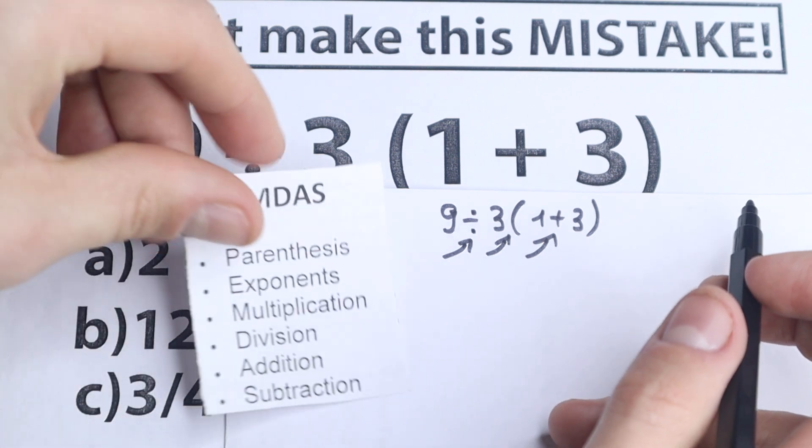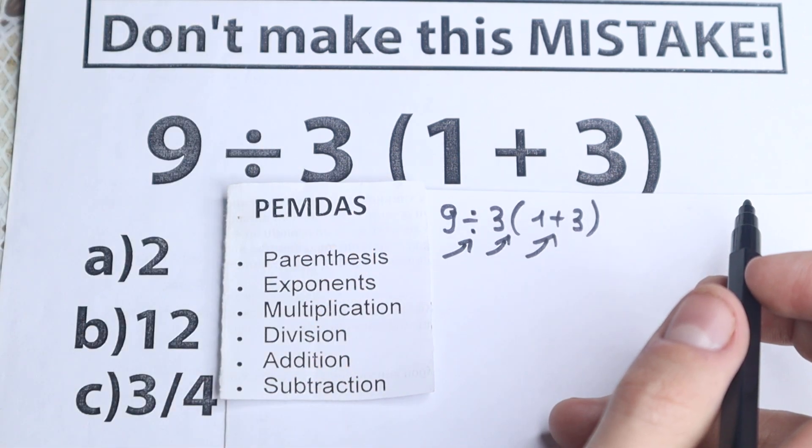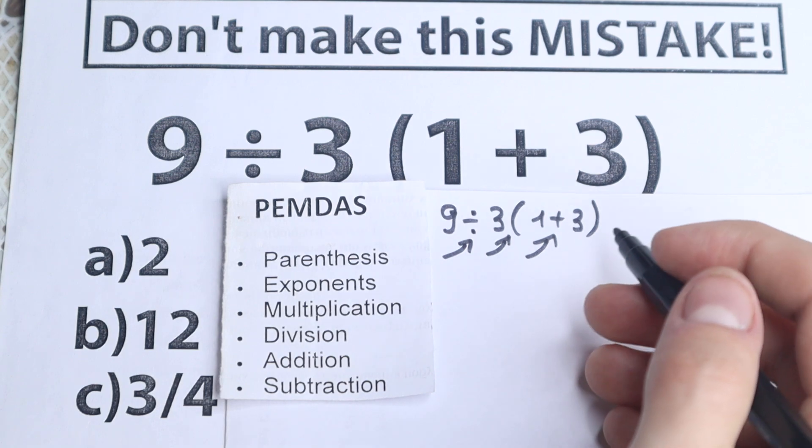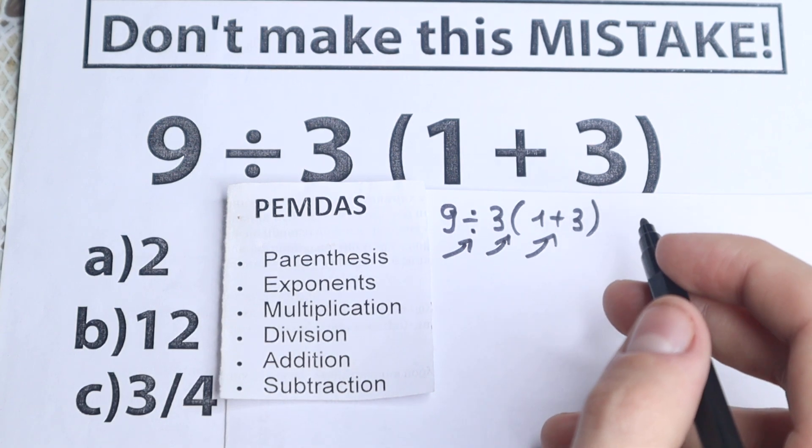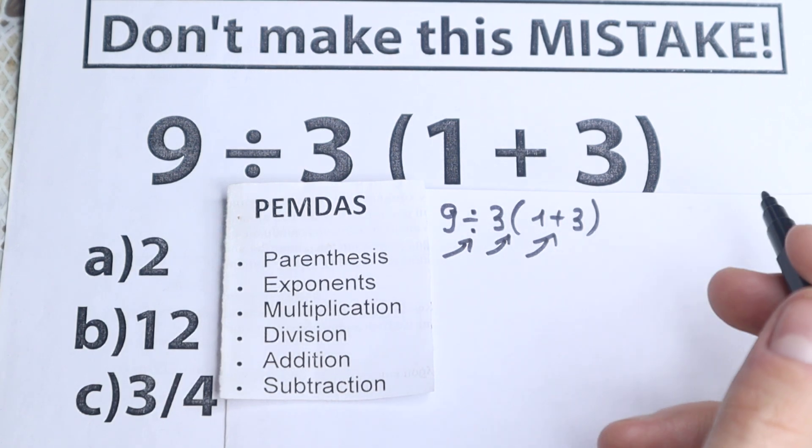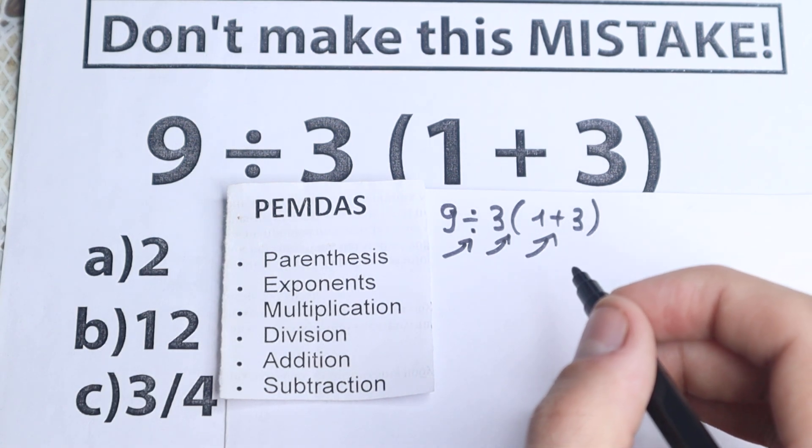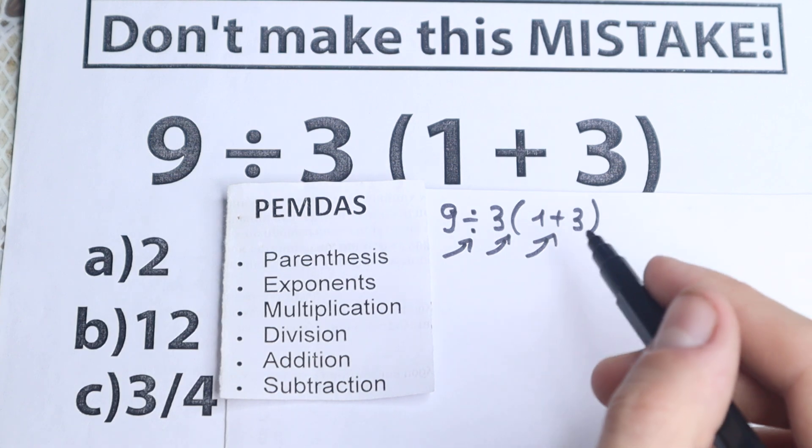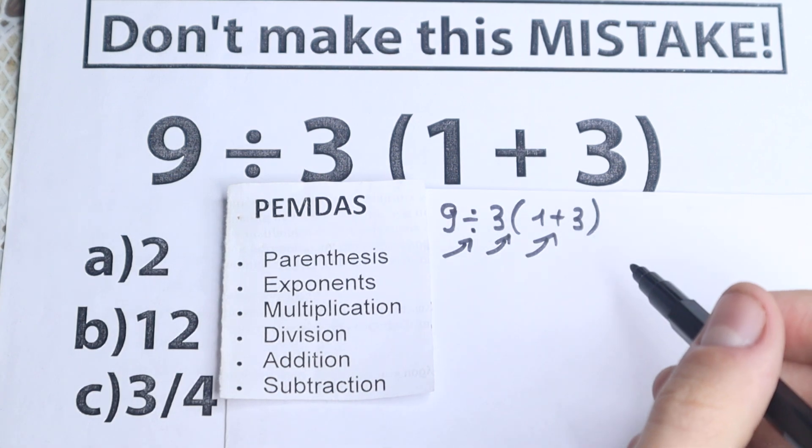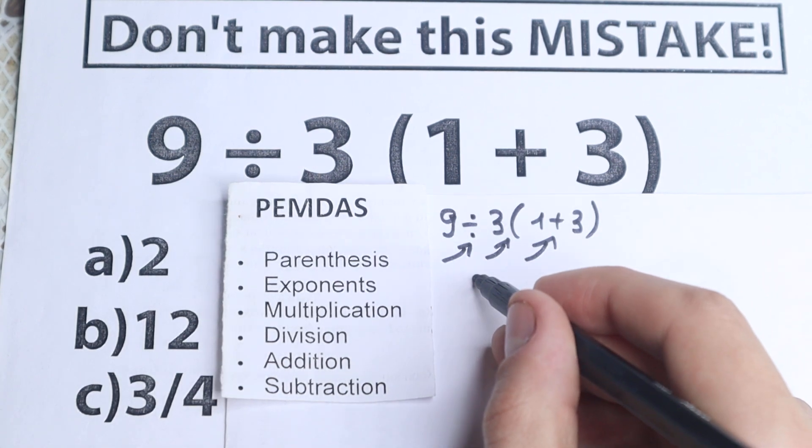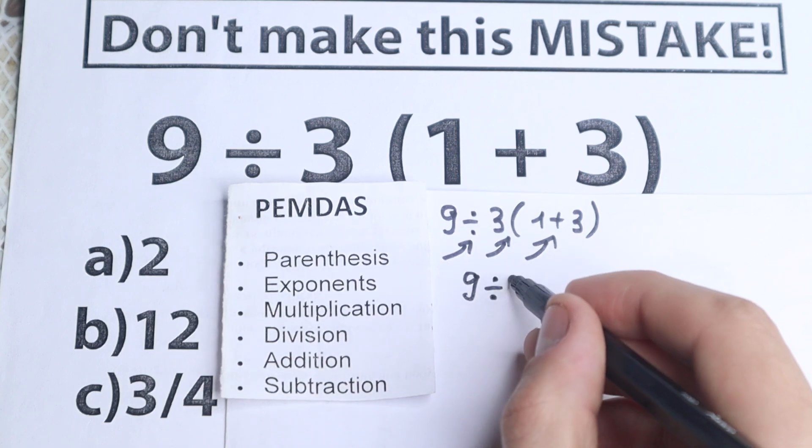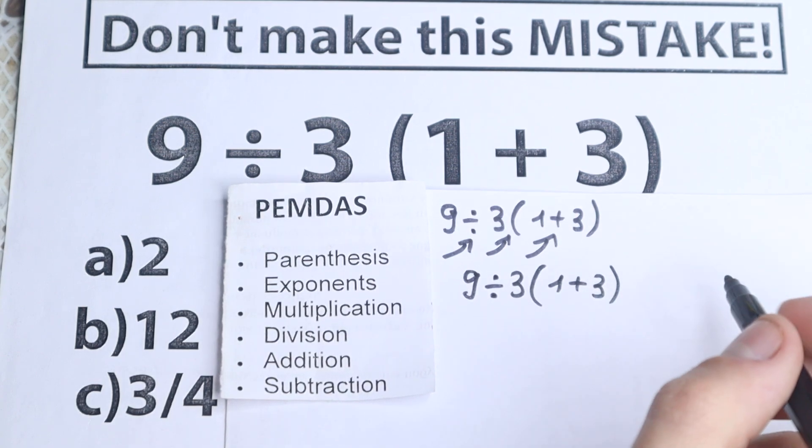For this question, I have PEMDAS order. This is the main popular order in the world. All internet libraries work according to PEMDAS. Scientific graphing calculators work according to PEMDAS. There are different orders, like BODMAS, but I want to solve it according to PEMDAS. So I'll rewrite this question: 9 divided by 3 and in parentheses 1 plus 3.